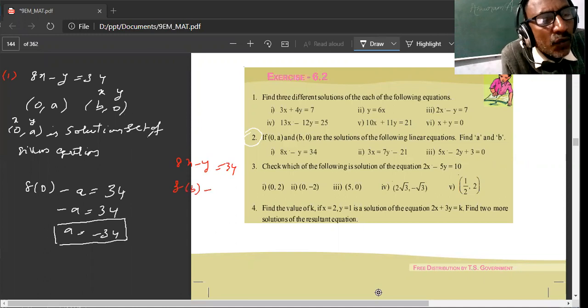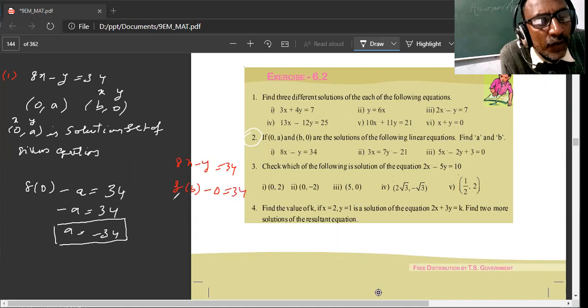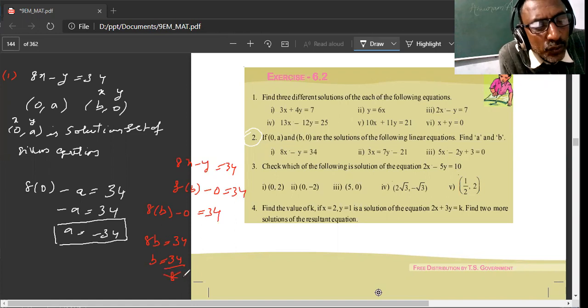So, now we have to tell. 8 times b minus 0 is equal to 34. 8b is equal to 34. b is equal to 34 divided by 8. So, b-value is 17 by 4.